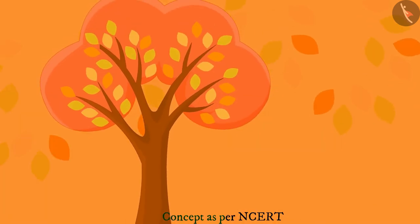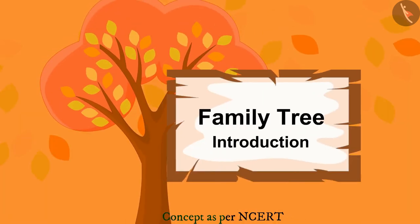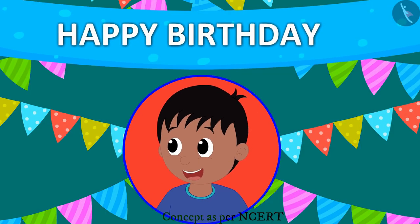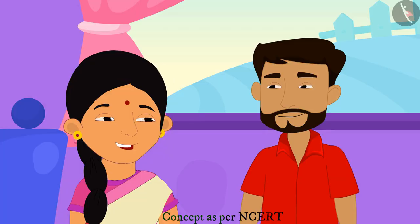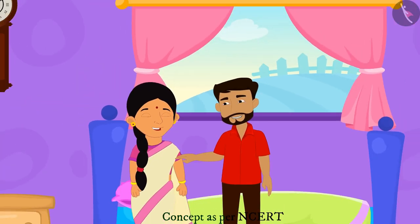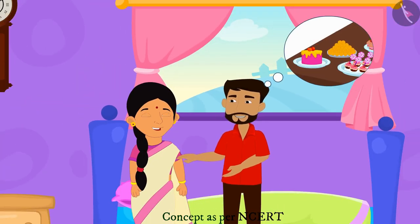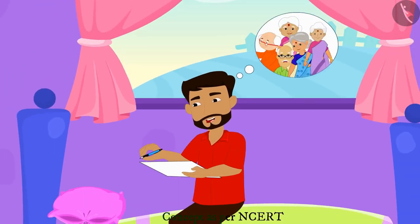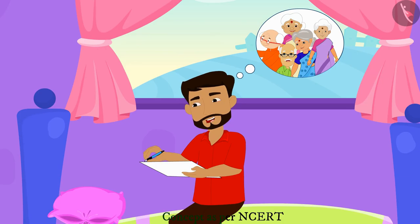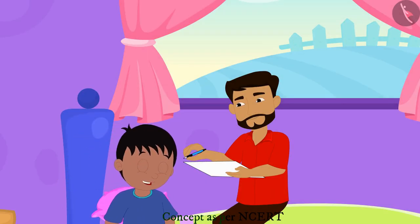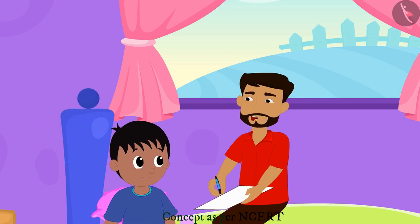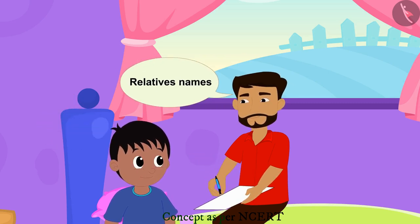Hello children! In this video we will learn about the family tree. Raju's 10th birthday is coming and his parents have decided to celebrate it in a grand manner. They are making a list to invite all their relatives for Raju's birthday. Raju asks his father what he is doing, and his father says he is making a list of the names of all his relatives.